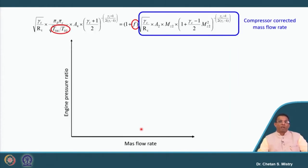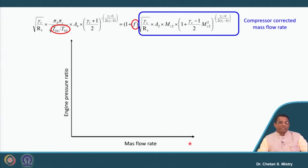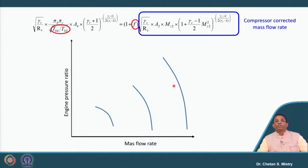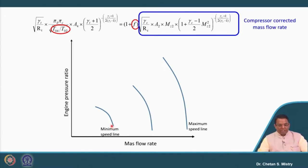This expression represents the corrected mass flow rate. Let us put this on a plot of corrected mass flow rate versus pressure ratio. These lines represent the compressor characteristics at different speeds — the maximum speed and the minimum speed. Decreasing the mass flow rate increases the pressure for all three different speeds. This is the characteristic of our compressor, and these speed lines are represented in terms of N over root-theta, which is the corrected speed.